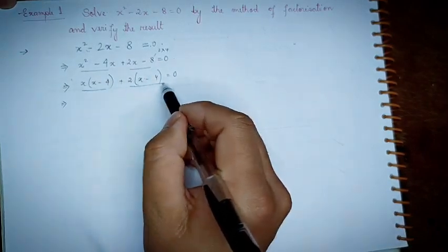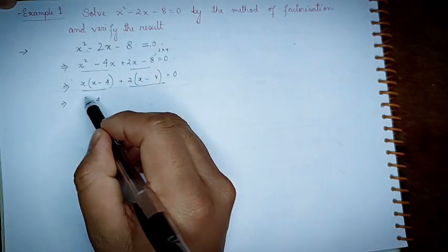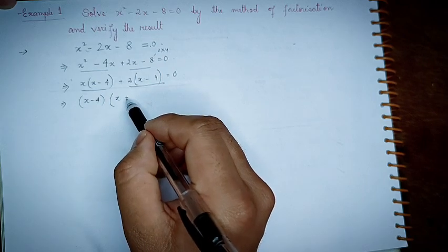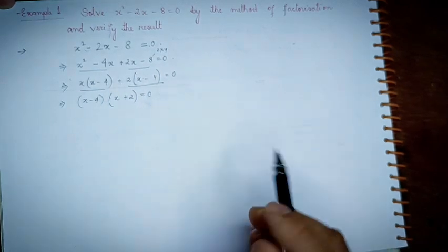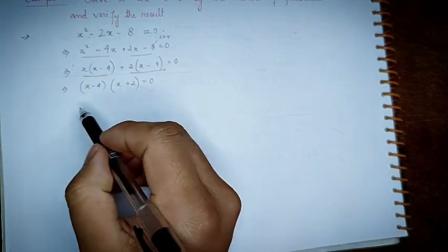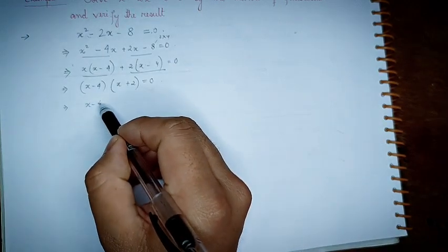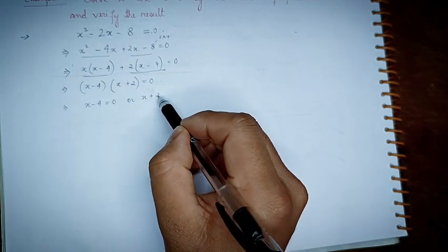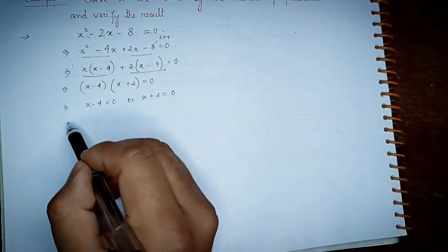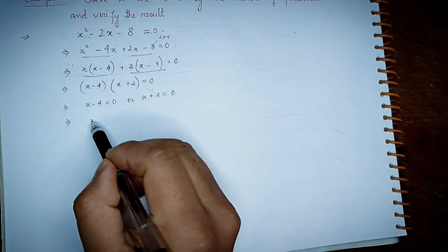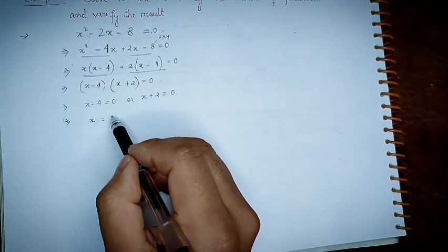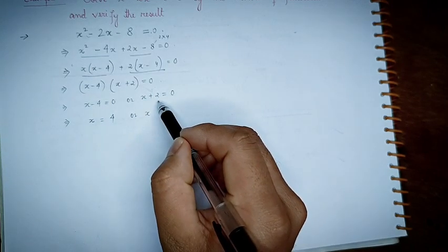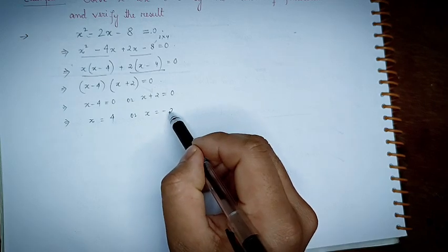We are going to factor: x minus 4, times x plus 2, is equal to 0. So we can write x minus 4 is equal to 0 or x plus 2 is equal to 0, which implies x is equal to 4 or x is equal to minus 2.